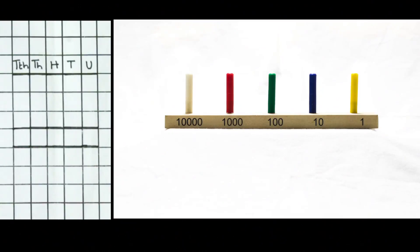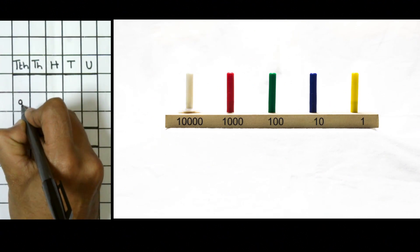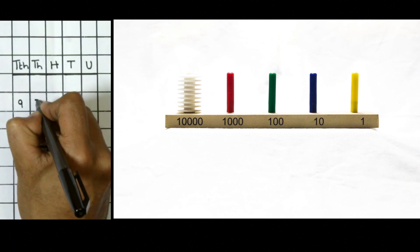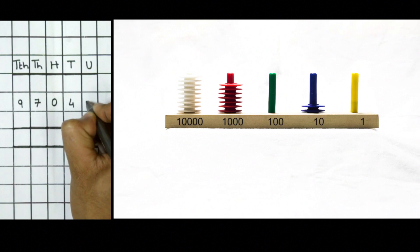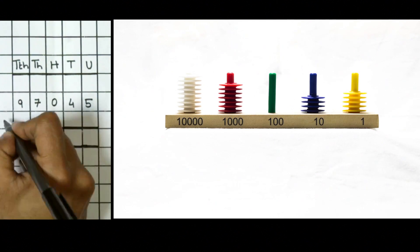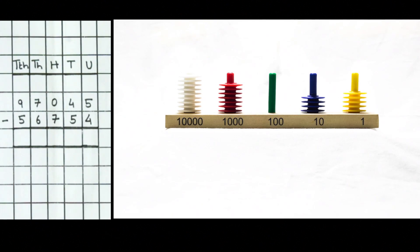What is 97,045 minus 56,754? Let students represent the minuend on the abacus, saying aloud the expanded form: nine rings of ten thousands, seven thousands, zero hundreds, four tens, five ones.